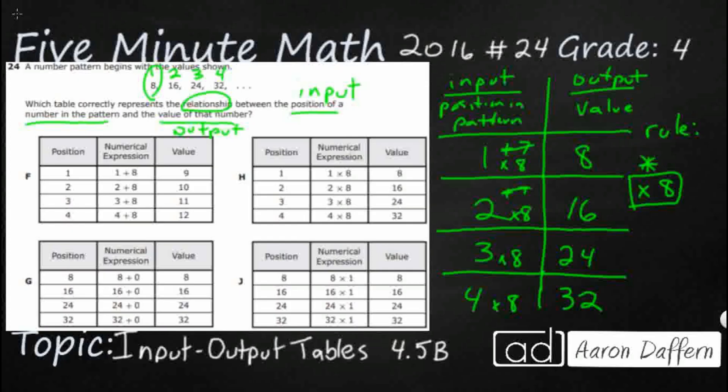Now let's look at our F, G, H, and J. So we actually have F. Look at this: 1 plus 8 equals 9, that's correct. 2 plus 8 equals 10, that's correct. 3 plus 8—so they're taking this position, 1, 2, 3, 4, they're adding it plus 8 and they're getting the value. And everything over here is correct based on the expression.